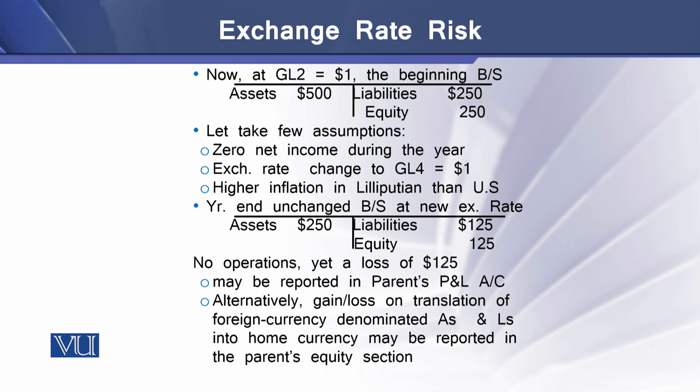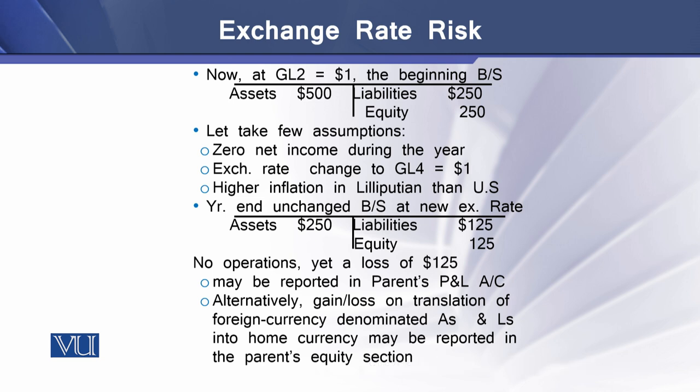How can this loss be accounted for in the books of the home country? There are two options. First, the loss of $125 US dollars may be reported in the parent company's profit and loss account. Alternatively, this translation loss — arising from translating GL-denominated financial results into dollar-denominated results — can be placed under the equity section of the parent company's balance sheet.